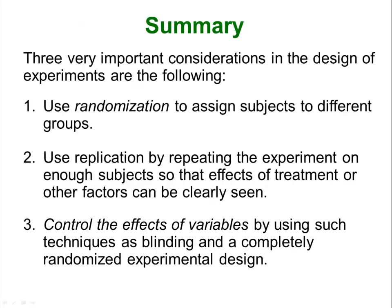In summary, there are three important considerations when designing your experiment: randomization — each subject is randomly assigned to a group; replication — having a large enough sample size so you can actually see the effects of treatments; and controlling for the effects of other variables as best you can by using techniques such as blinding.